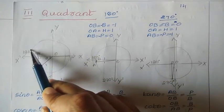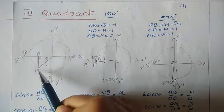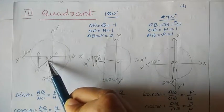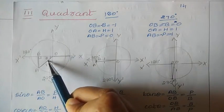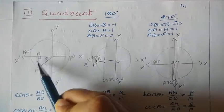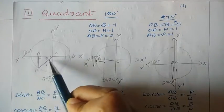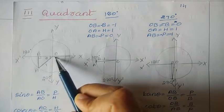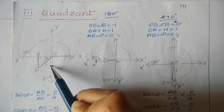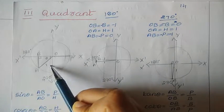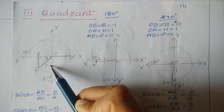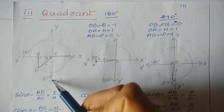While moving, at some point A, it produces an angle theta. So here we have an angle theta. Now if I draw a perpendicular, then I can get a right angle triangle ABO. For this we can apply the trigonometric ratios. Now here we need to find out the value of trigonometric ratios from 180 degrees to 270 degrees.